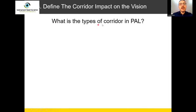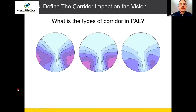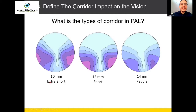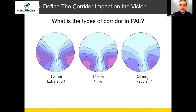What is the type of corridor in progressive lens? We have three types of corridor in progressive lens: extra short, where the distance of the corridor is 10mm; short corridor, with a distance of 12mm; and regular corridor, with a distance of 14mm.